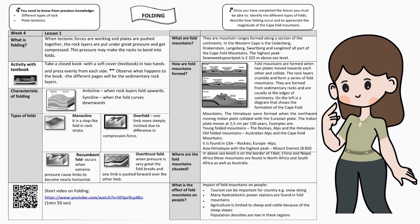The Himalayas were formed when the northward-moving Indian plate collided with the Eurasian plate. The Indian plate moves at 2.5 cm per year. Examples of young folded mountains are the Rockies, Alps, and Himalayas. Old folded mountains include the Australian Alps and the Cape Fold Mountains.